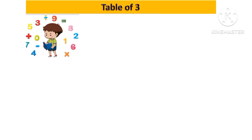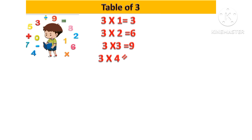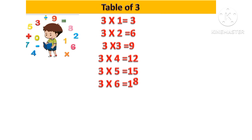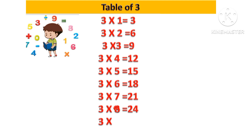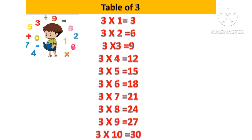Let's revise: 3 one's are 3, 3 two's are 6, 3 three's are 9, 3 four's are 12, 3 five's are 15, 3 six's are 18, 3 seven's are 21, 3 eight's are 24, 3 nine's are 27, 3 ten's are 30.